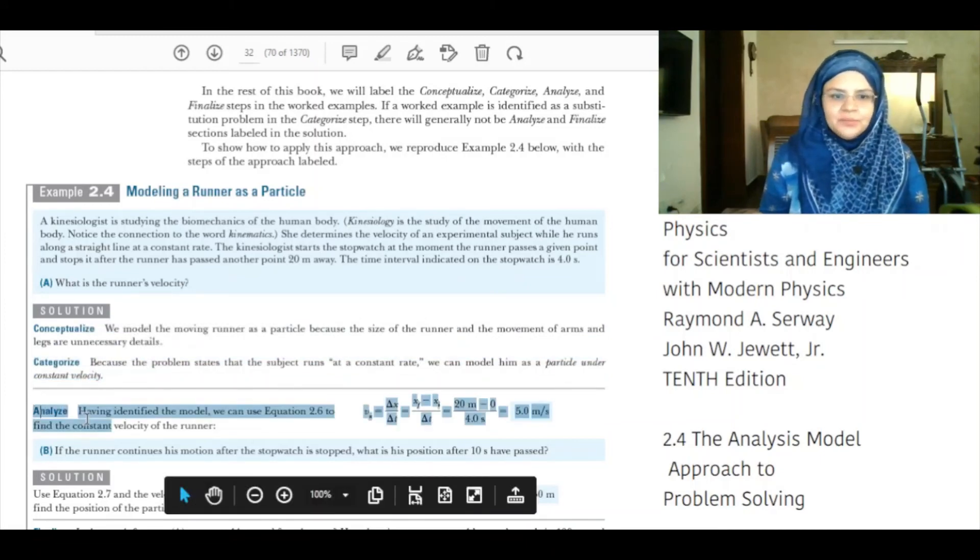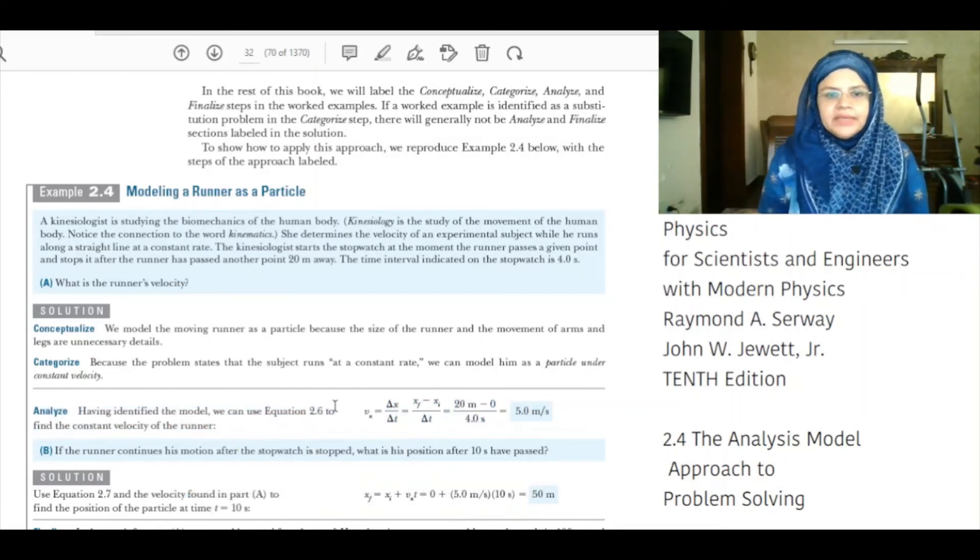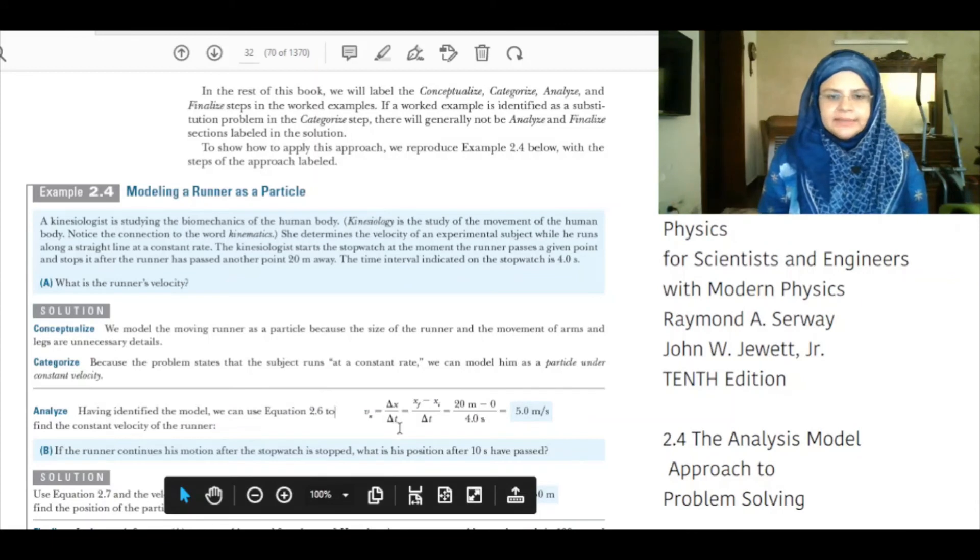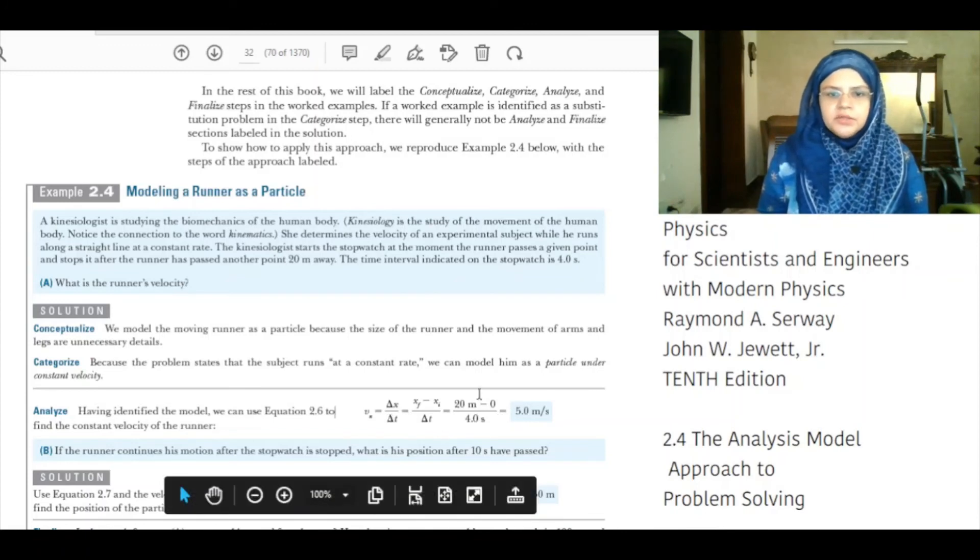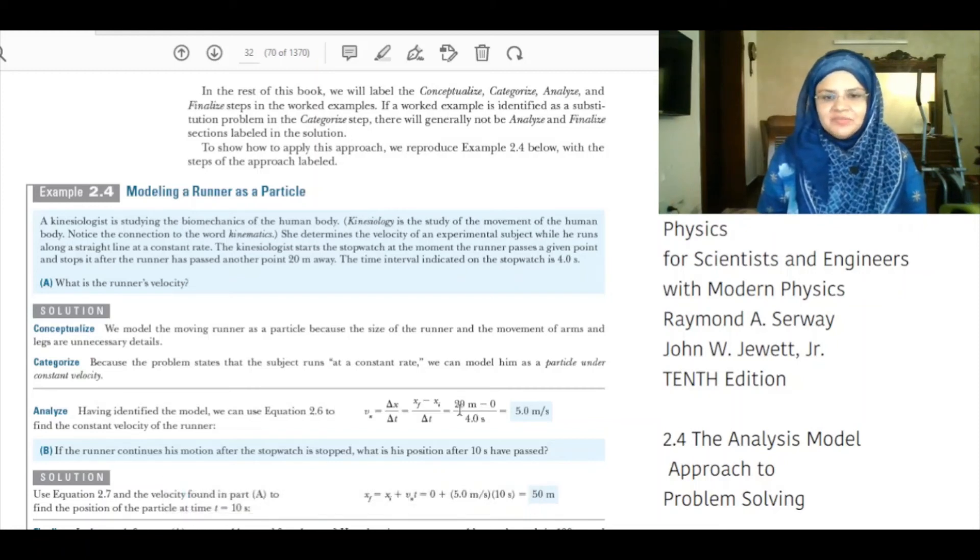Analyze: Having identified the model, we can use equation 2.6 to find the constant velocity of the runner. V_x is equal to delta x over delta t which is equal to x_f minus x_i divided by delta t. The final displacement is 20 meters. The initial displacement is 0. The time interval is 4 seconds. Therefore, V_x is equal to 20 meters minus 0 divided by 4 seconds giving us the velocity of 5 meters per second.